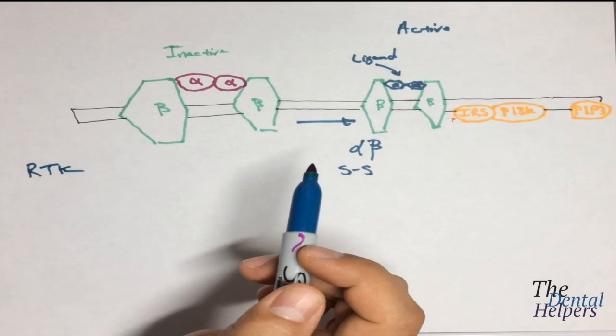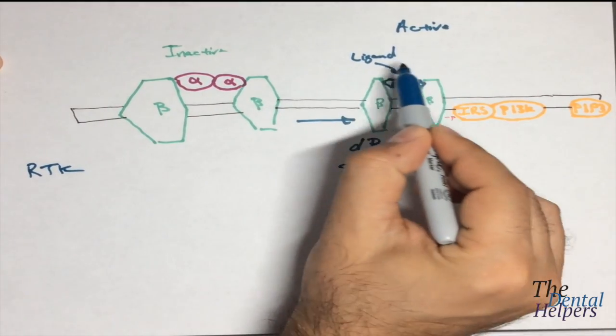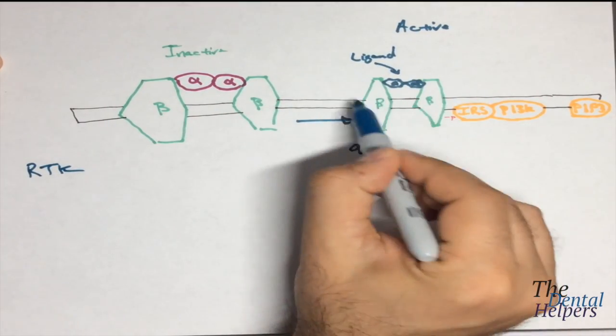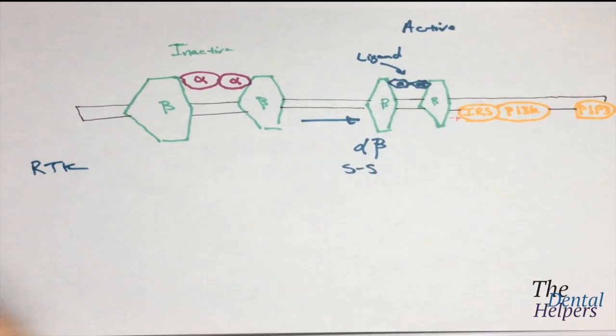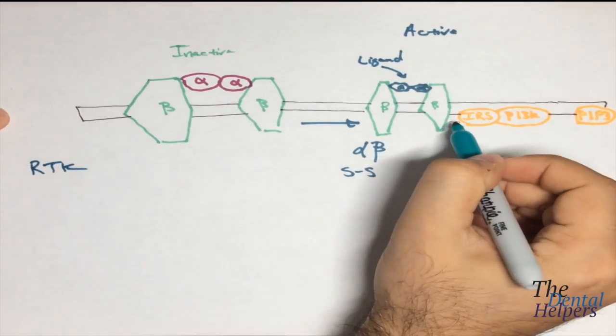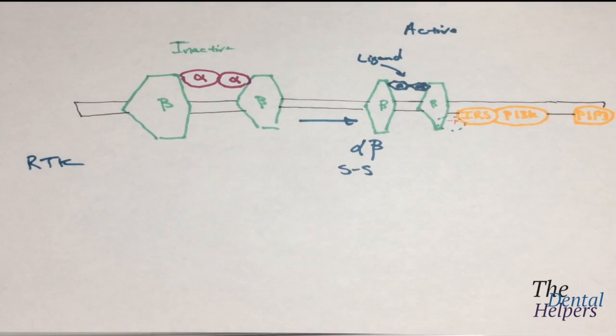So once we have the conformational change, the intrinsic tyrosine kinase is now active, and we're going to have the ability to autophosphorylate. And so autophosphorylation, which is drawn right here, it's going to end up autophosphorylating IRS.